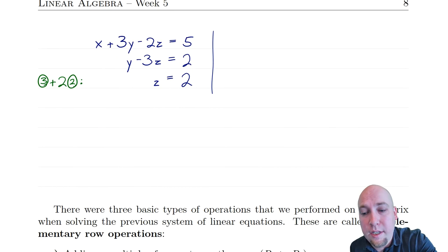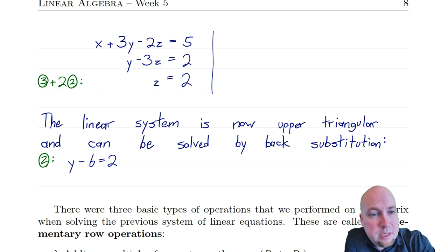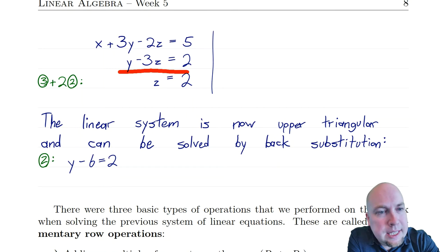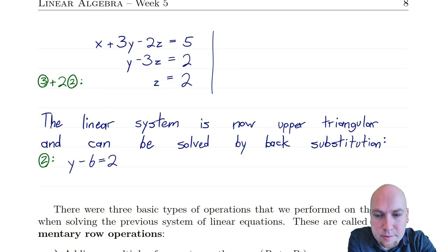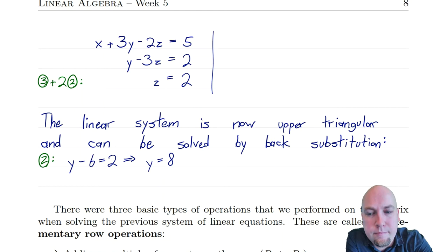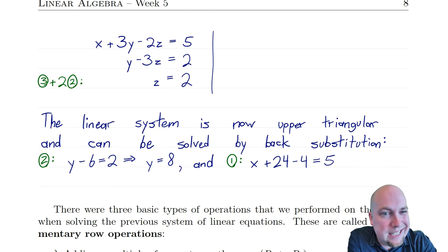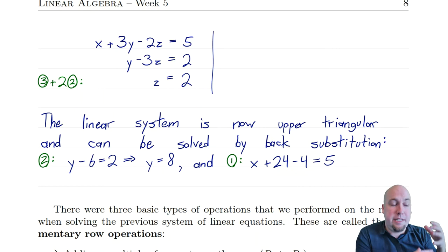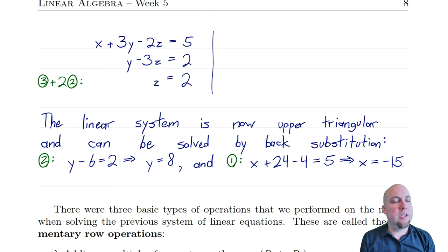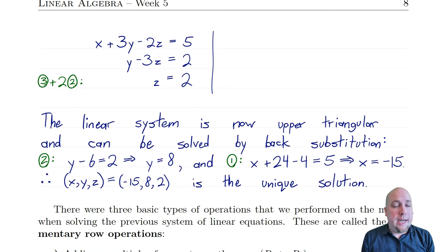Starting at the bottom: the bottom equation tells me z equals 2. Plugging that into the second equation: y minus 6 equals 2, rearranging gives y equals 8. Then going back to equation one: x plus 3y with y equals 8 gives x plus 24, and minus 2z with z equals 2 gives minus 4, all equaling 5. Moving everything to the right-hand side, x equals minus 15. So x equals minus 15, y equals 8, z equals 2 — that's the unique solution.